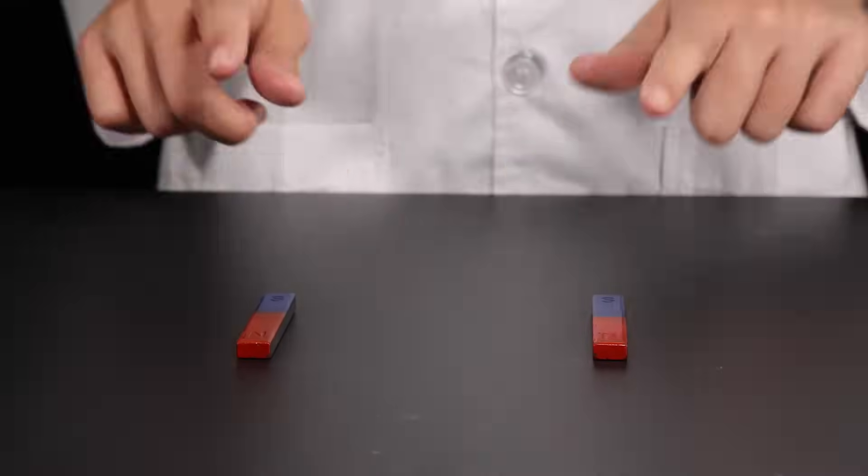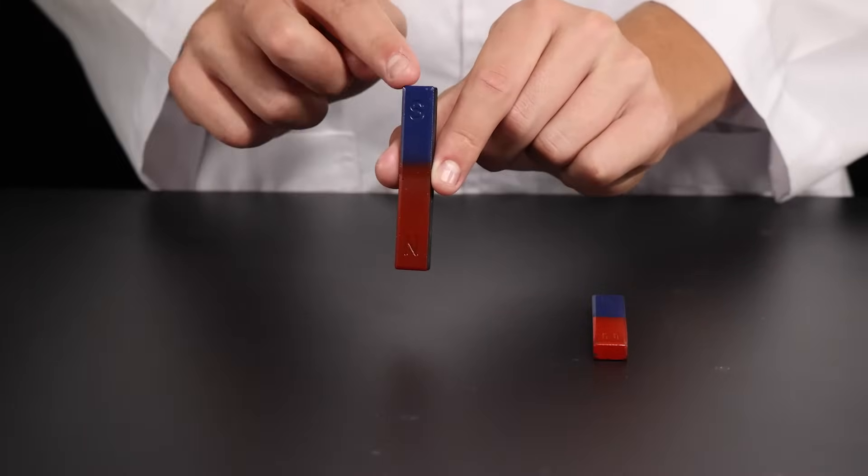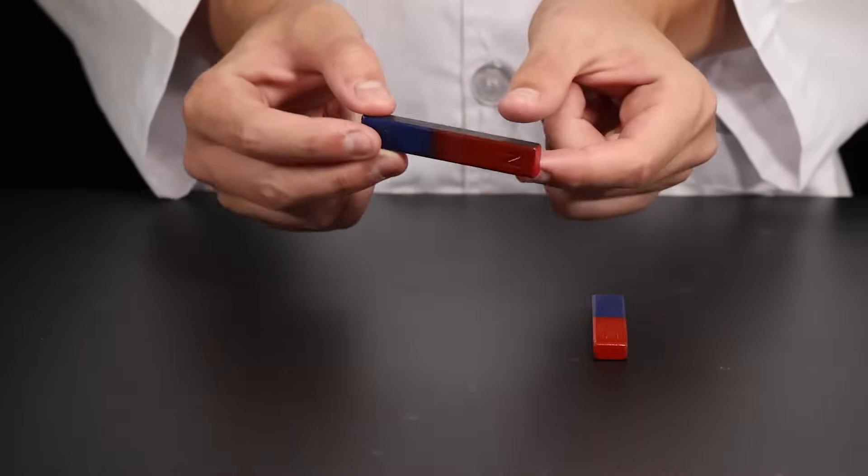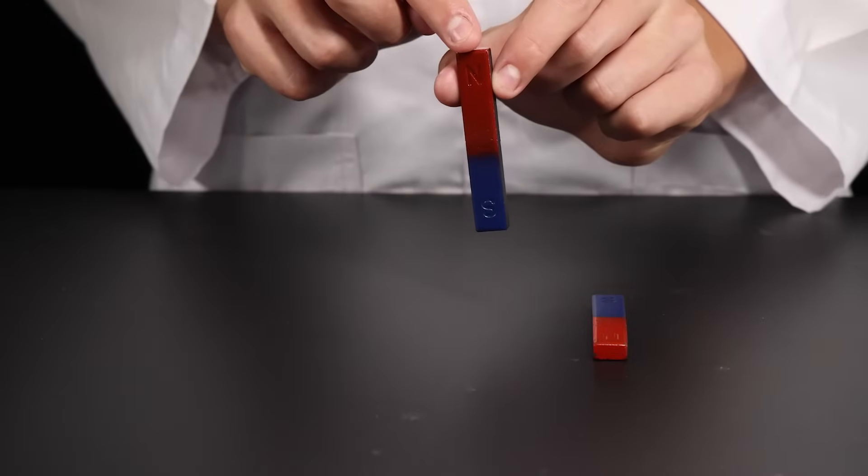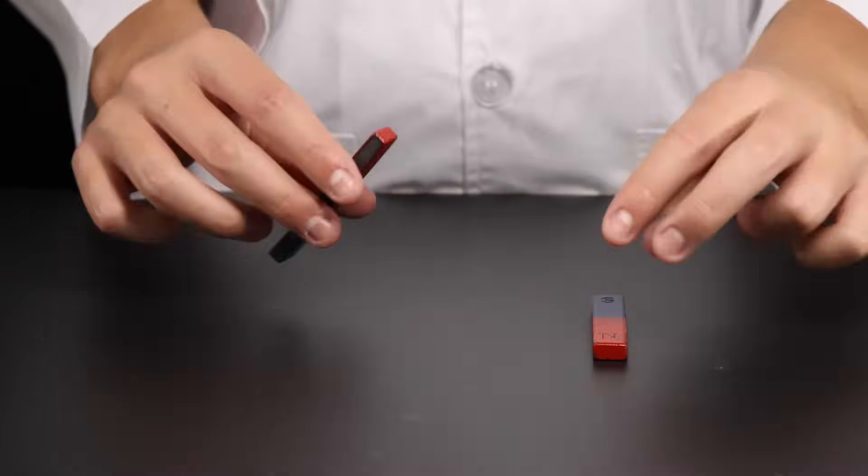Here we have two bar magnets. At the end of each bar magnet are poles. There is a south pole at one end and a north pole at the other. It is at the poles where the magnetic force of the bar magnet is the strongest.